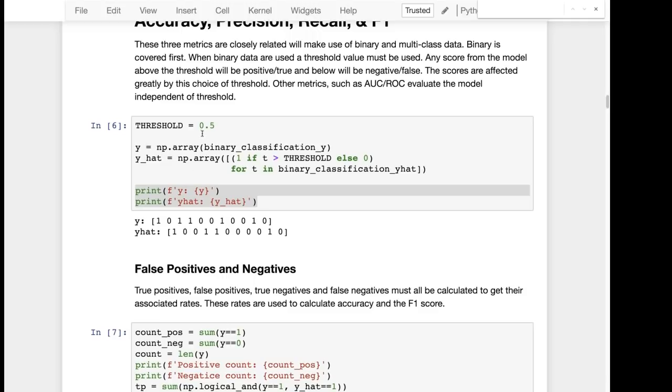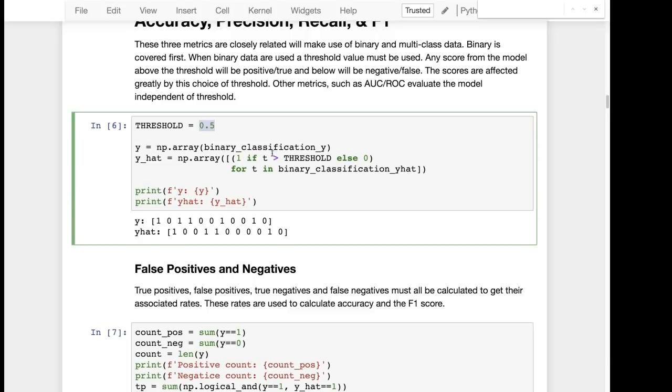So that's what this threshold is for. All of the probabilities that were above 0.5 are considered true on the y hat on the predictions. This is a very important part of test designs. As you develop tests, you want to set that threshold to a good value that segregates the trues from the false.